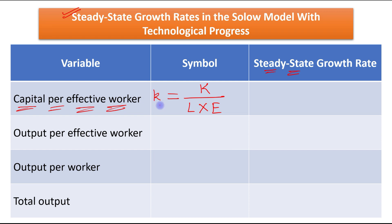In the steady state, capital per effective worker is constant. That is the reason its growth rate in the steady state will be zero. So the steady-state growth rate of capital per effective worker is zero.